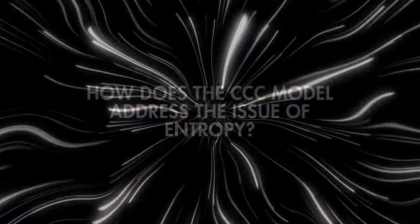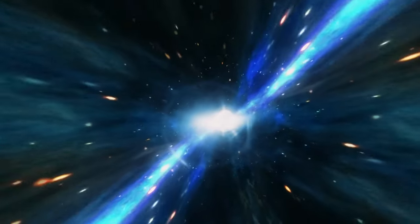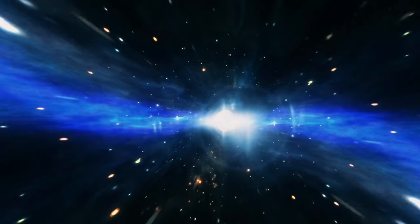How does the conformal cyclic cosmology model address the issue of entropy? If the universe cycles endlessly, how is the increasing entropy resolved? And how does the universe reset its entropy to a low level at the beginning of each cycle?